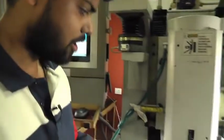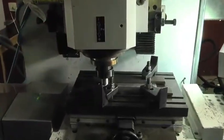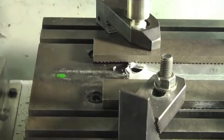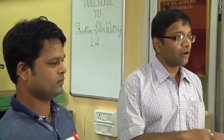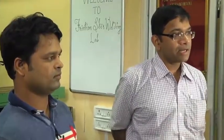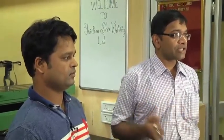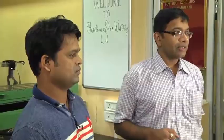Initially we have set the rotational speed and traversal speed in such a way that we are bound to get some bad welds, to demonstrate how the system detects poor quality. What you see next is a conventional vertical milling machine that has been transformed into a friction stir welding machine with the help of different technologies, which will be explained by Mr. Mahatok, a PhD scholar in this lab.